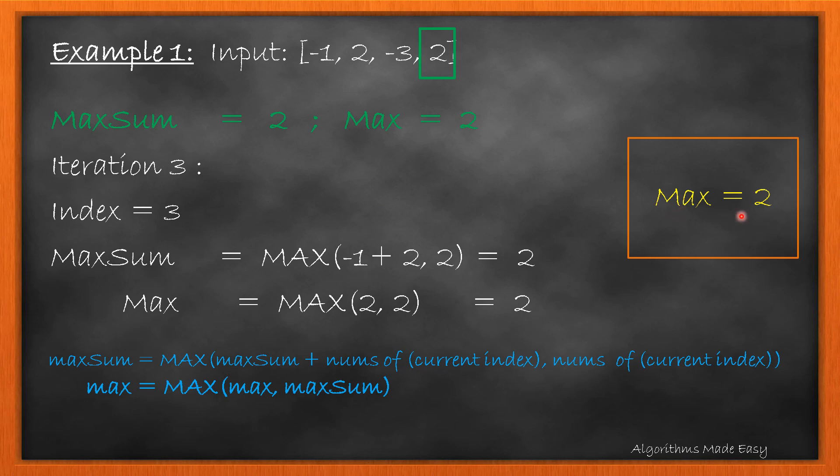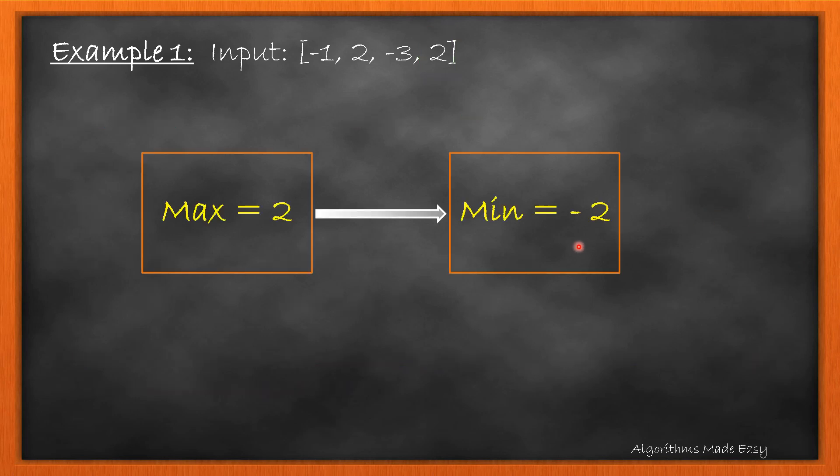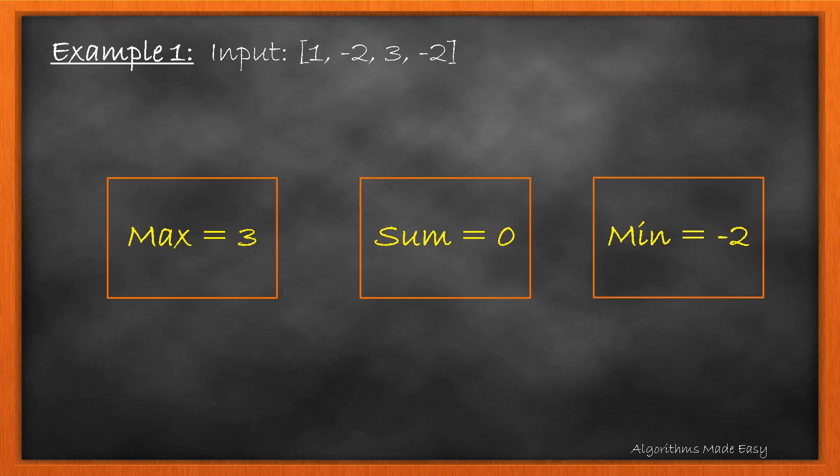Here, we get max as 2. As this is the result of the flipped array, we will flip the answer sign as well to get the minimum value which will be minus 2. As now we have all the 3 values, we will find the maximum of max and sum minus min. We get 3 as max and so we return 3.